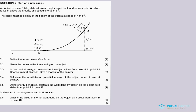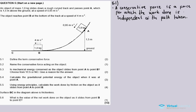5.1: Define the term conservative force. A conservative force includes forces like gravitational force. A gravitational force is a force for which the work done is independent of the path taken. Friction and applied force are non-conservative - the work done depends on the path taken. But gravity doesn't depend on the path taken or the route taken; it's always acting.